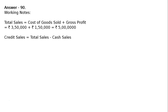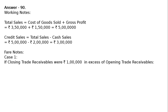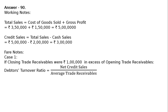Credit sales = total sales minus cash sales. Total sales is rupees 5 lakh and cash sales is rupees 2 lakh, so credit sales is rupees 3 lakhs. Case 1: if closing trade receivables were rupees 1 lakh in excess of opening trade receivables. Debtors turnover ratio = net credit sales divided by average debtors.